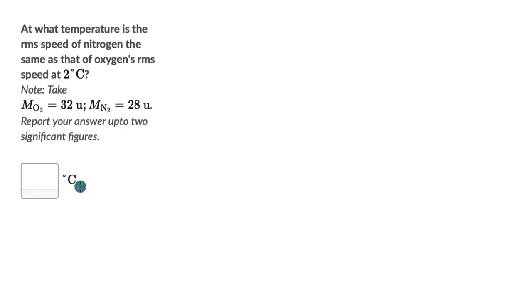Okay as always pause the video, first try this one on your own. Alright hopefully you have given this a shot. Now the RMS speed of any gas molecule, that is V_RMS, this is given by this relation: square root of 3RT divided by M. R is the gas constant, T is the temperature, M is the molecular mass of that gas.